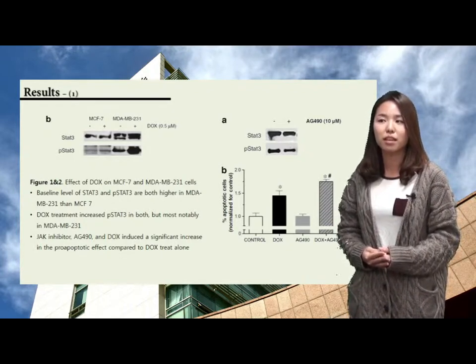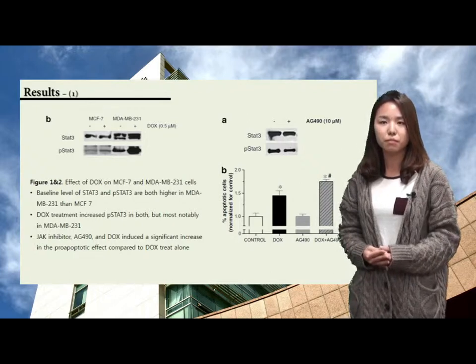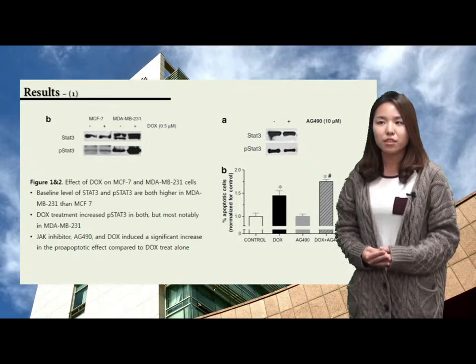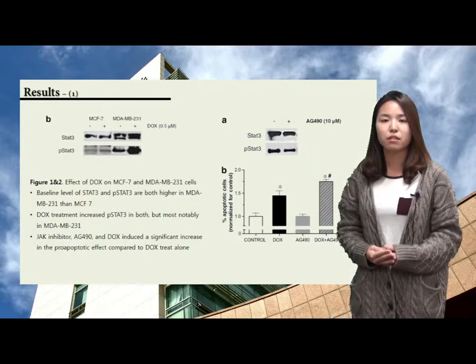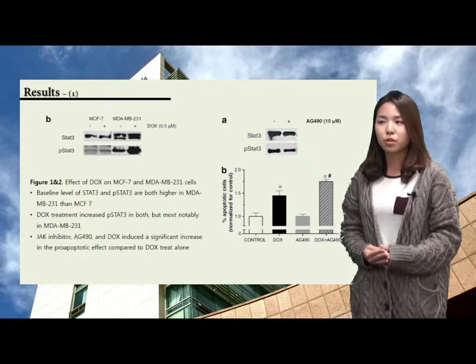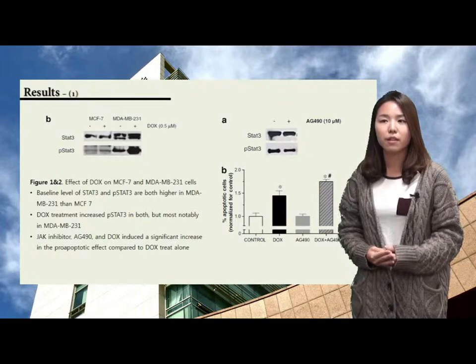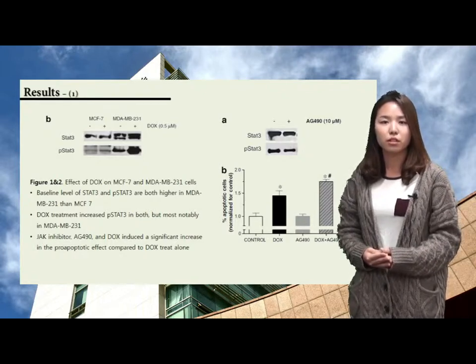Doxorubicin treatment increased phospho-STAT3 level in both cell lines, but most notably in MDA-MB-231 cells. They treated JAK inhibitor, AG490, to see its effect on phospho-STAT3, and the results show decreased phospho-STAT3 level in AG490 treated condition.